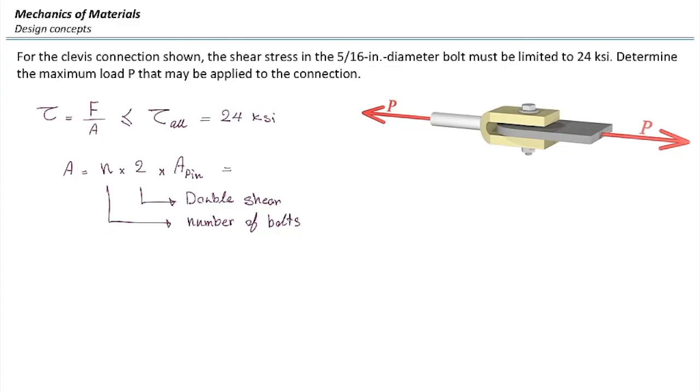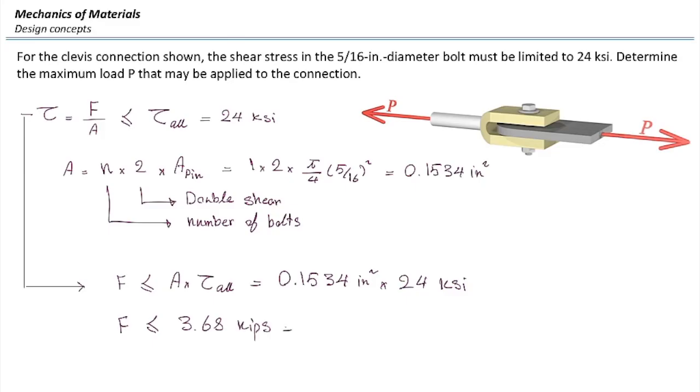All right, now let's plug the number. We have one multiplied by two multiplied by pi over four diameter, which is five sixteenths squared. Area would be 0.1534 squared inch. Now let's plug that back into the design equation. Force should be smaller than area multiplied by allowable stress. Area is determined and allowable stress is given. So force is limited to 3.68 kips, which is equal to 3680 pounds.